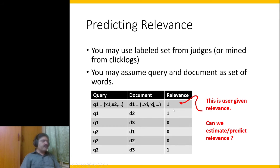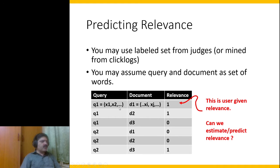From click logs or through judges we have relevance information. This table says that d1, which has words x_i, x_j, and so on, is relevant to query q1 which has terms x_1, x_2, and so on — indicated by a binary relevance score of 1.